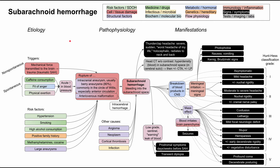This is a mechanism of disease map on subarachnoid hemorrhages. This is one type of hemorrhagic stroke that you can differentiate from ischemic strokes. In subarachnoid hemorrhages, the definition is that you're bleeding into the subarachnoid space, and we'll be discussing the etiology, the pathophysiology, and the manifestations. Each of these boxes is color-coded according to the legend on the top right, and I'll be going through them one by one.